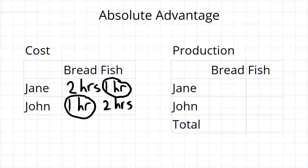Now let's have a look at how much they can actually produce. First we are going to assume that Jane and John are going to be self-sufficient, so this means that they are just going to produce for themselves and not interact with each other.